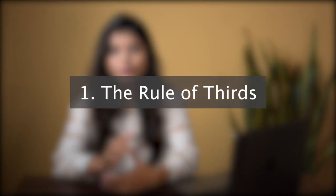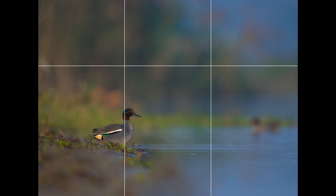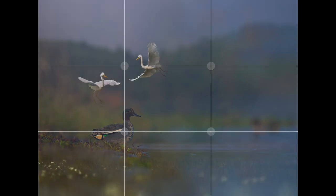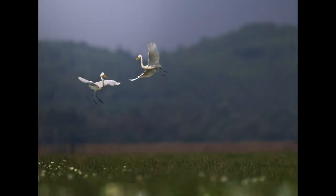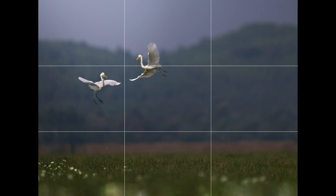Rule number 1: The Rule of Thirds. It is the most basic and well-known rule of all. The rule of thirds uses magical lines that divide an image into 9 equal parts using 2 horizontal lines and 2 vertical lines. We should always place the most important component — our subject — on any of the intersections of these lines. Here you can see our photo clicked at Mangalajuri wetlands of Orissa. Two egrets are fighting over territories, and being our subjects, we place them on the top-left intersection point. This makes the composition stronger than simply placing the subjects in the center.